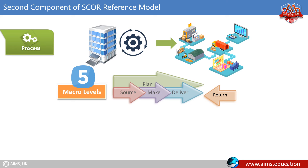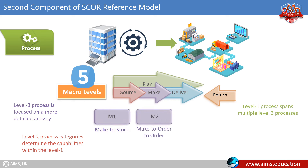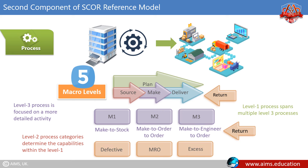The level three process is focused on a more detailed activity level. One level one process spans multiple level three processes. Level two process categories determine the capabilities within the level one processes. For example, key level two processes include make-to-stock, make-to-order, and engineer-to-order for Source, Make, and Deliver processes, and defective versus MRO versus excess for the Return process.